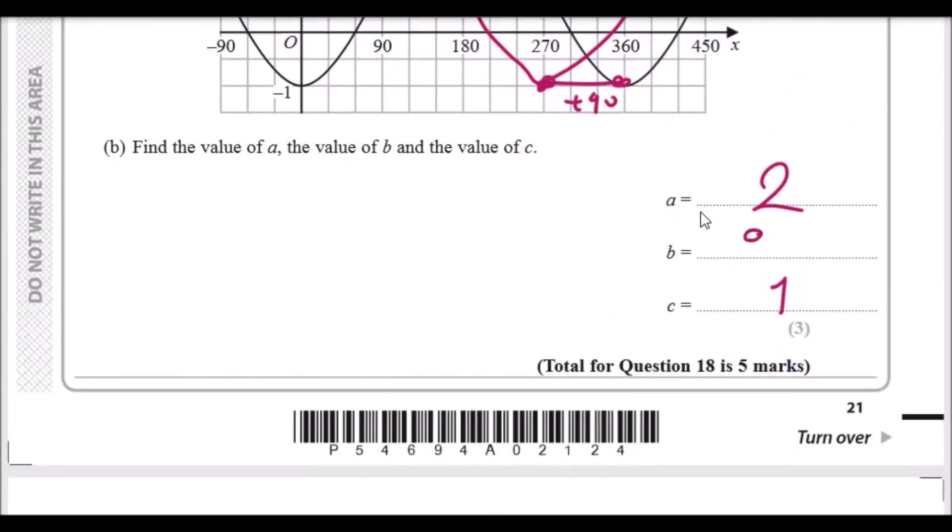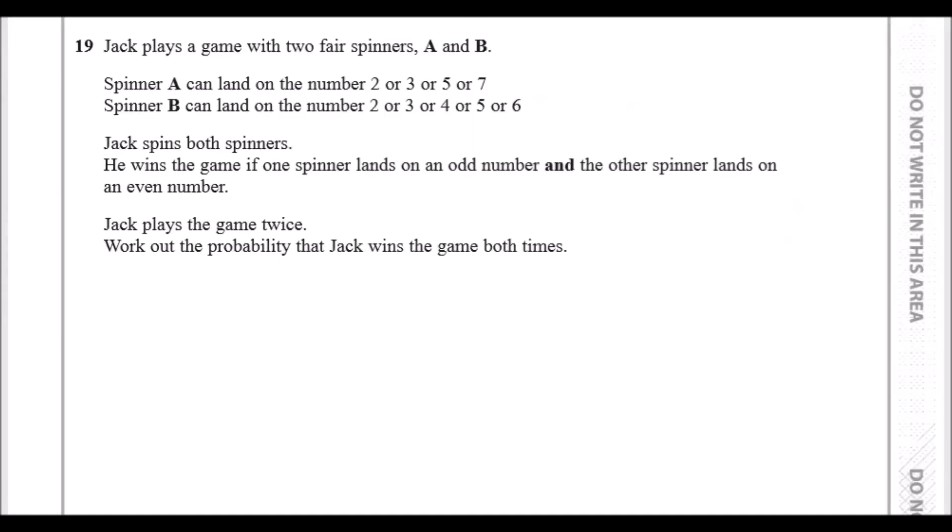Number 19. Jack plays a game with two fair spinners, A and B. Spinner A can land on 2, 3, 5, or 7, whereas B can land on 2, 3, 4, 5, or 6. Jack spins both spinners, and to win the game one needs to be odd and the other needs to be even. Jack plays the game twice. Work out the probability that Jack wins the game both times.